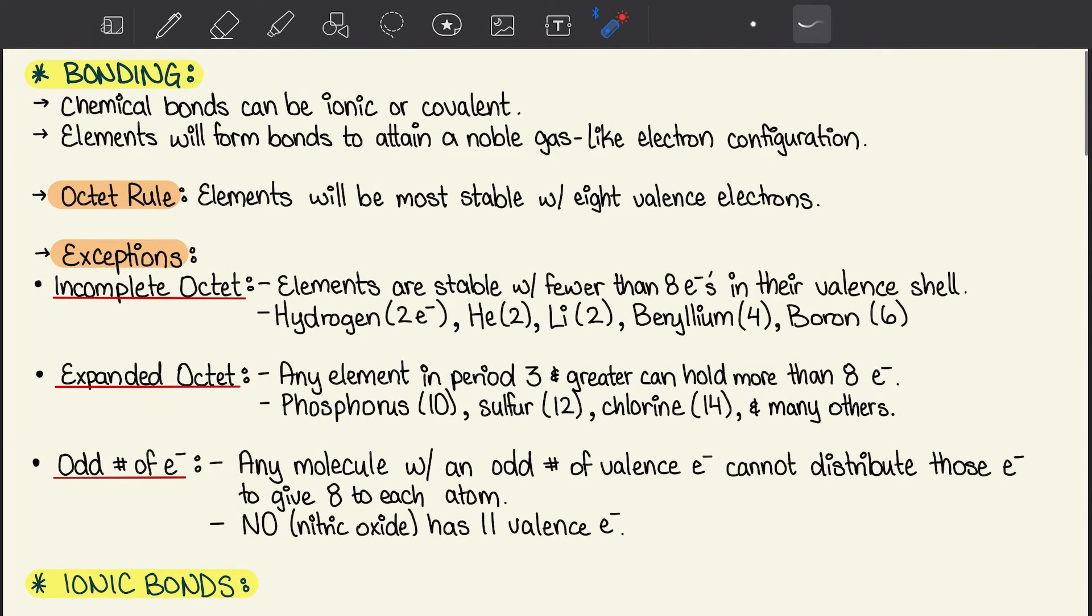Some elements have an expanded octet, which means that they can hold more than 8 electrons. These are any elements in period 3, so this would be phosphorus, which needs 10 for its octet, sulfur which needs 12, chlorine that needs 14, and there are many others.